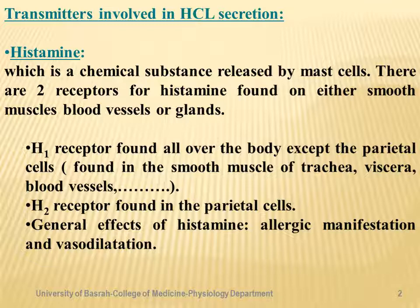The first transmitter involved in hydrochloric acid secretion is histamine. Histamine is a chemical substance released by cells in the stomach mucosa. There are two receptors for histamine. The H1 receptor is found all over the body — in smooth muscle, trachea, viscera, and blood vessels — except in the parietal cell.